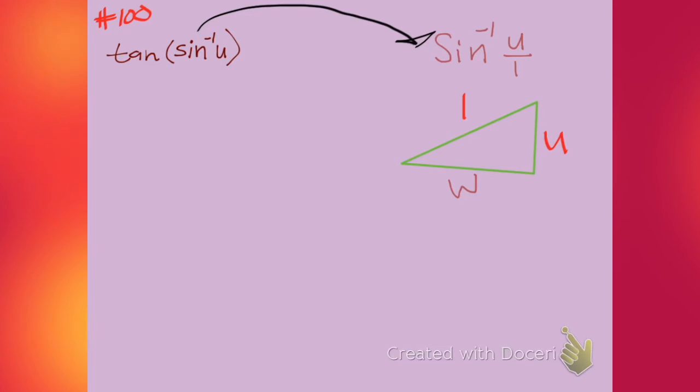All right. So then why not just call this side w? I should use f. What the f? We're trying to find out what w is. So we use the Pythagorean theorem. We solve that for w.